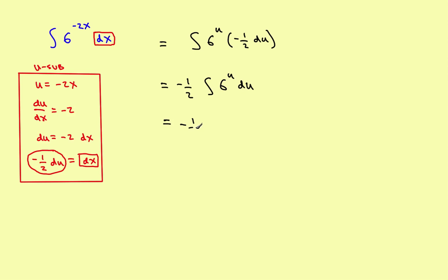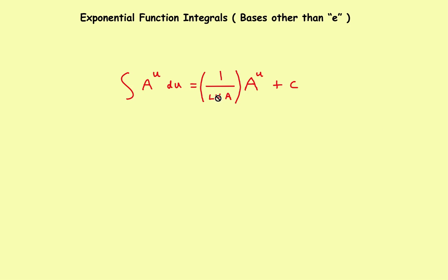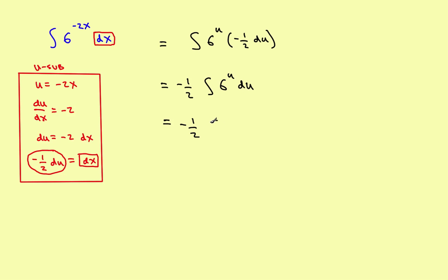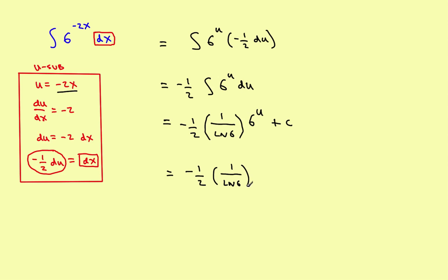That's negative one-half. Now applying the formula — 1 over the natural log of the base times the original function — we get negative one-half times 1 over the natural log of 6, times 6 to the u, plus c. The last step is to substitute u back as negative 2x, giving the final answer: negative one-half times 1 over the natural log of 6, times 6 to the negative 2x, plus c.